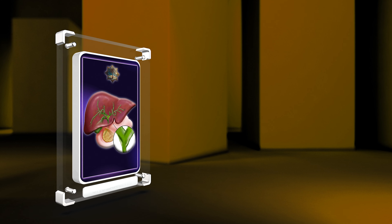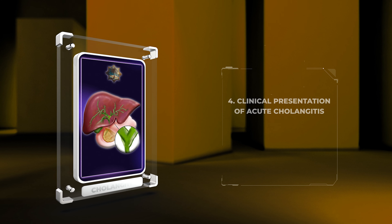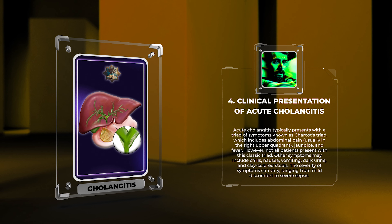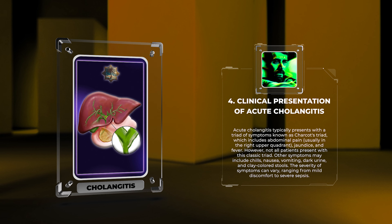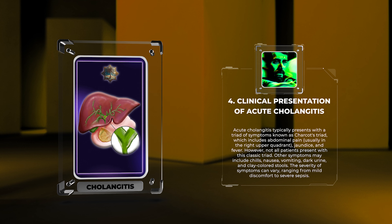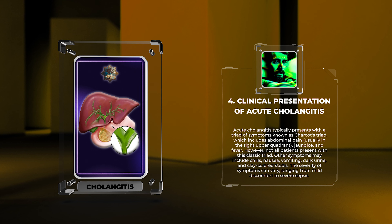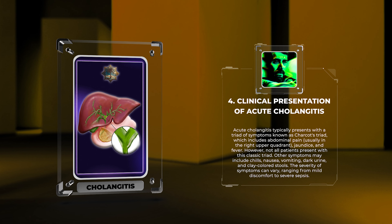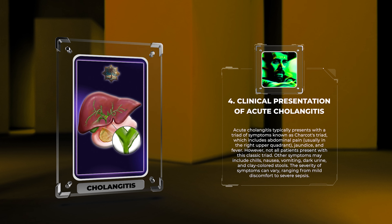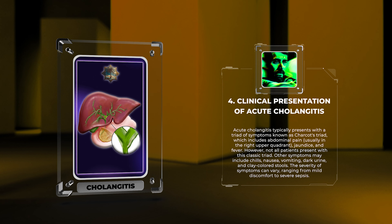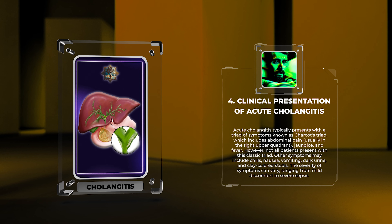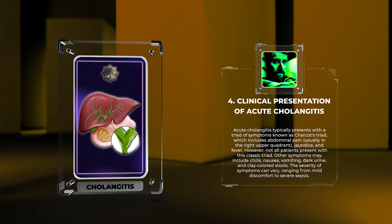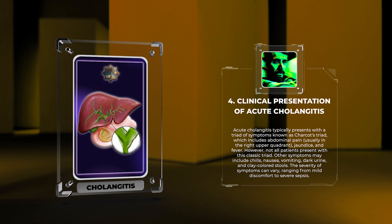Acute cholangitis typically presents with a triad of symptoms known as Charcot's triad, which includes abdominal pain, usually in the right upper quadrant, jaundice, and fever. However, not all patients present with this classic triad. Other symptoms may include chills, nausea, vomiting, dark urine, and clay-colored stools. The severity of symptoms can vary, ranging from mild discomfort to severe sepsis.